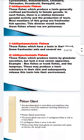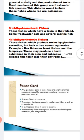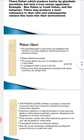Fishes also have poison glands. Any specialized gland in some fishes and amphibians secretes a mucus-like substance which contains venom or poison. This poison gland occurs in cartilaginous fishes as well as in bony fishes. In cartilaginous fishes, it is in the skin, while in bony fishes they are associated with spines, fins, tail, and gill cover.